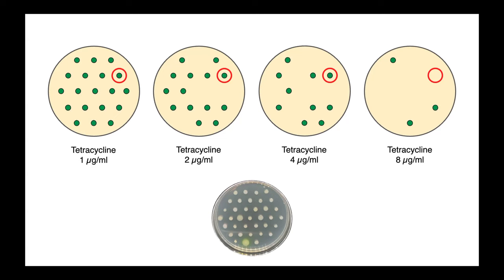Following that overnight incubation, you can see that colonies have formed on some plates, but not all of them. And by comparing where we get growth and where growth is inhibited, we can determine an organism's minimum inhibitory concentration.